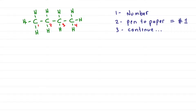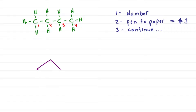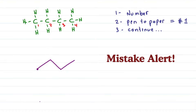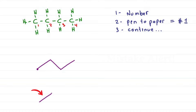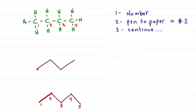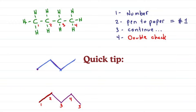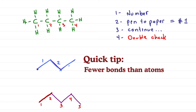We have four carbons. I start by putting pen to paper — that's one, two, three, four. A lot of students make the mistake of counting one for the first line they draw, two, three, four — but if you count those carbons, that's actually five. This right here is a bond between carbon one and two, rather than drawing the first line and getting a one over here, so make sure you double check. Quick tip: you'll always have fewer bonds than atoms. Here we have four carbons and just three bonds.